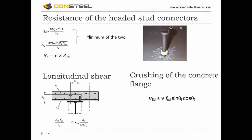A very important check is the resistance of the headed stud connectors. We must calculate both the resistance of the shaft of the headed stud and the resistance of the concrete beneath it; the minimum of the two gives the resistance of one stud. Multiplying by the number of studs along the span gives the total resistance. It is also necessary to ensure the concrete flange can resist the longitudinal shear force transmitted by the shear connectors, using formulas for specific shear surfaces.